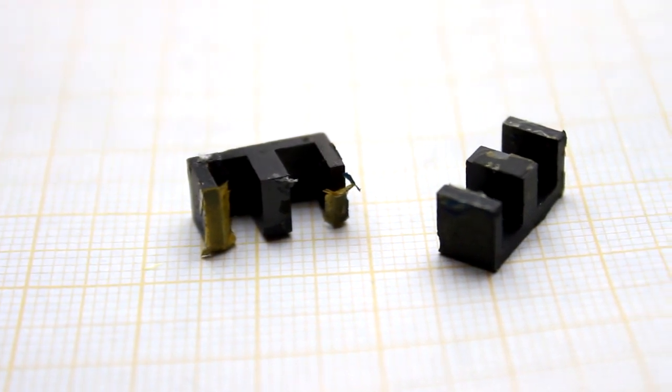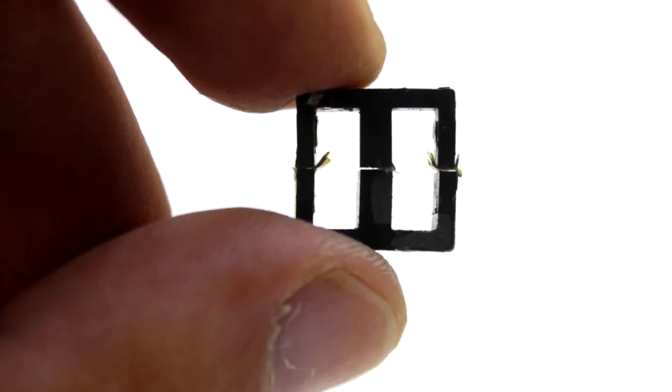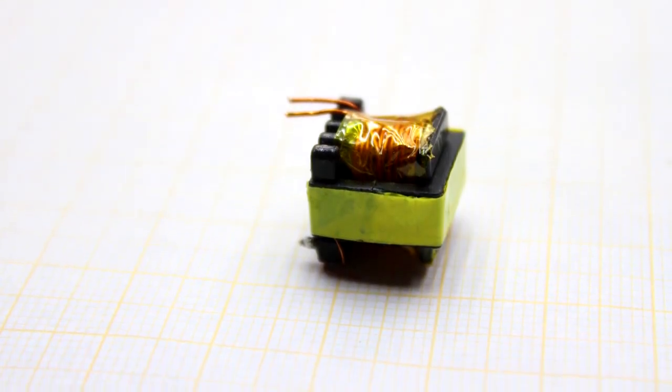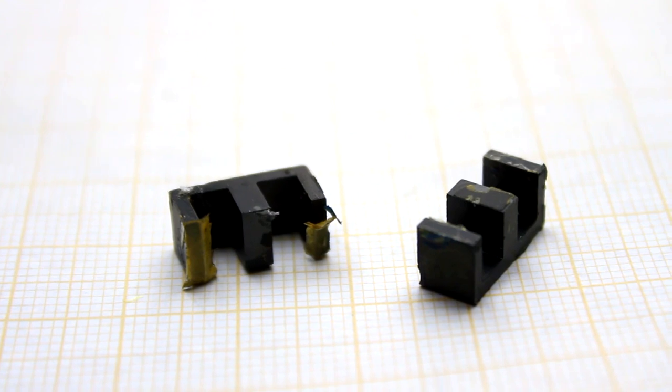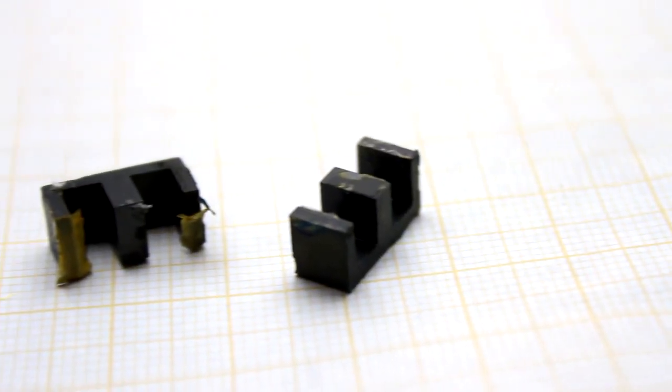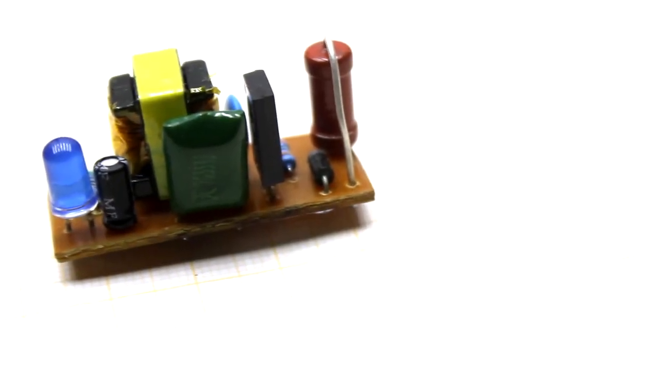If you don't find the transformers with a gap, then it can be made artificially by placing one layer of office paper between the halves of the core. The finished transformer is collected, the halves of the core are pulled together by adhesive tape or glued together with super glue.